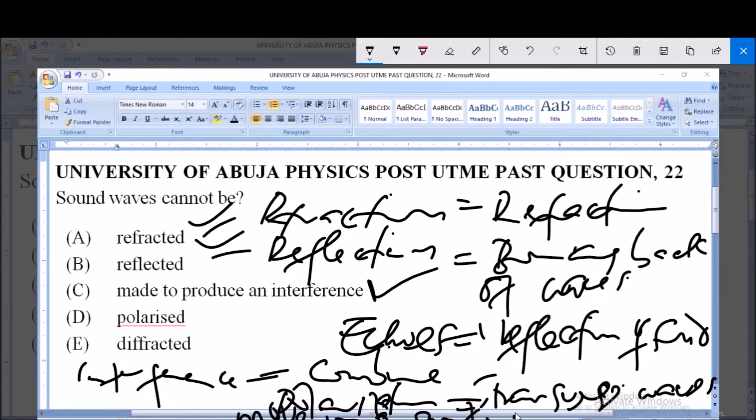When a wave is made to move in a single plane, it is said to be polarized. This is a property that is exhibited by only transverse waves. Now sound is not a transverse wave. It's a mechanical wave called longitudinal. So only transverse waves can be polarized. Sound is a longitudinal wave, so it cannot be polarized.